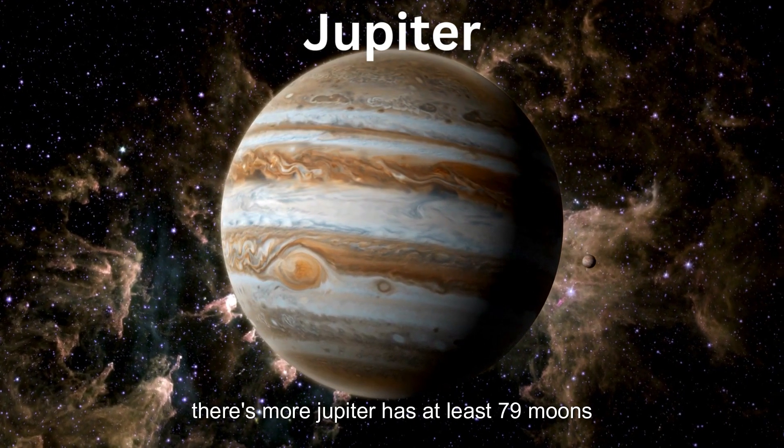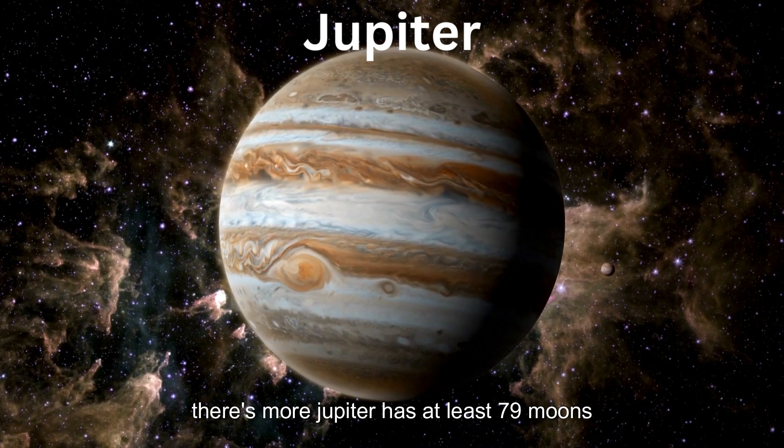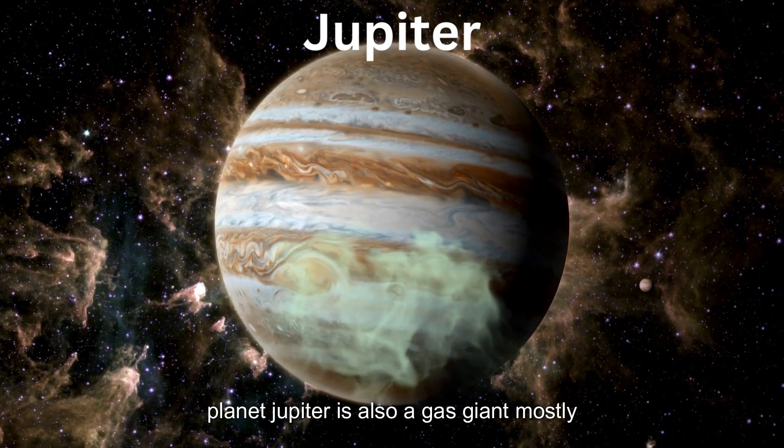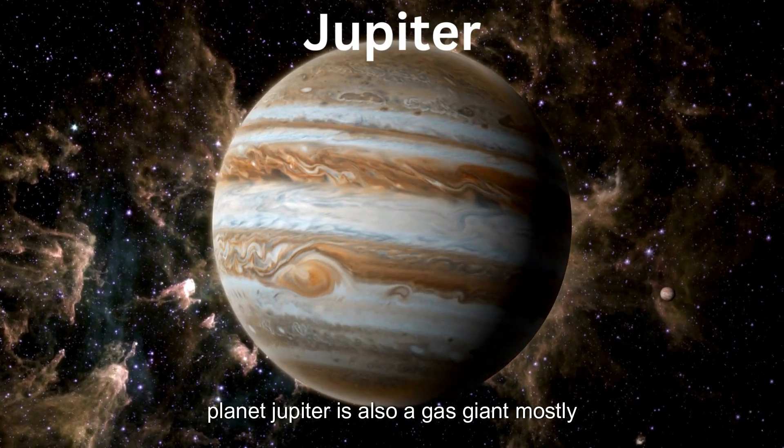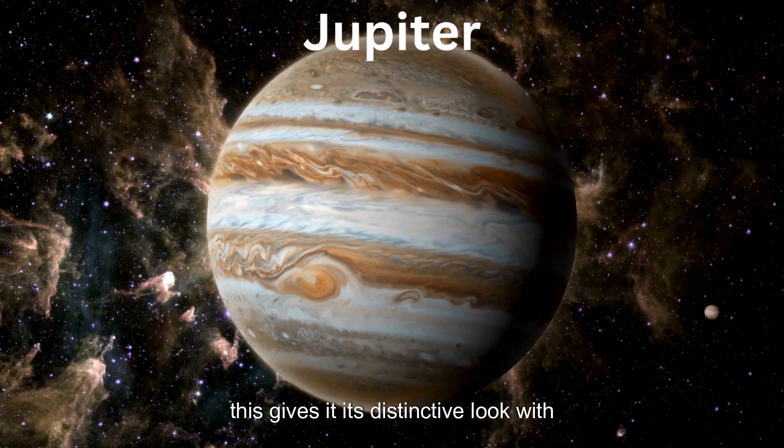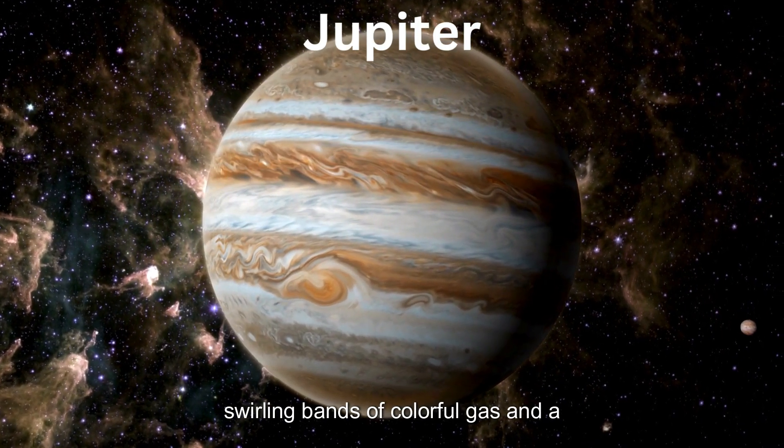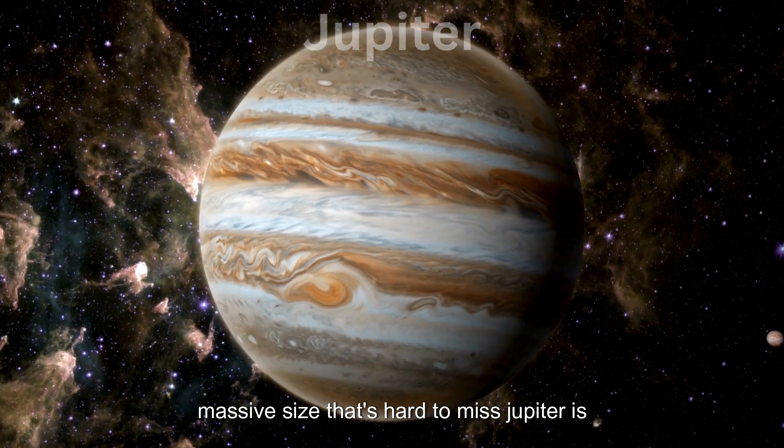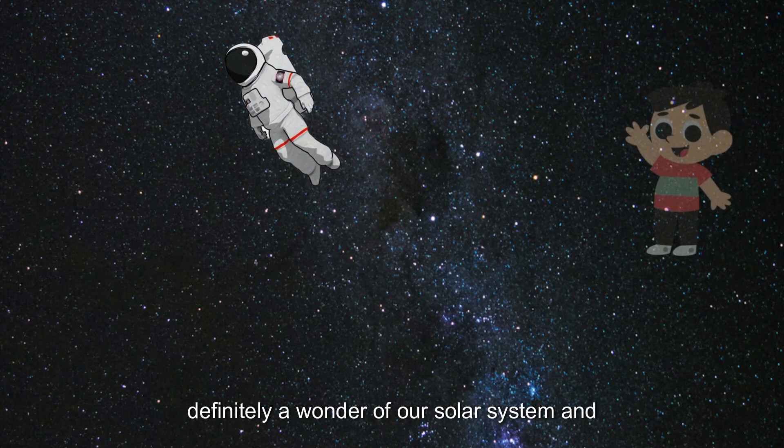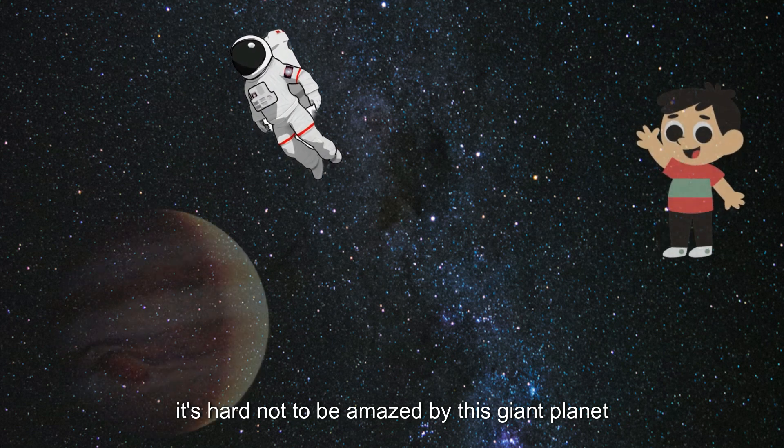But wait! There's more! Jupiter has at least 79 moons! It's like a whole solar system in one planet! Jupiter is also a gas giant, mostly made up of hydrogen and helium. This gives it its distinctive look with swirling bands of colorful gas and a massive size that's hard to miss. Jupiter is definitely a wonder of our solar system, and it's hard not to be amazed by this giant planet.